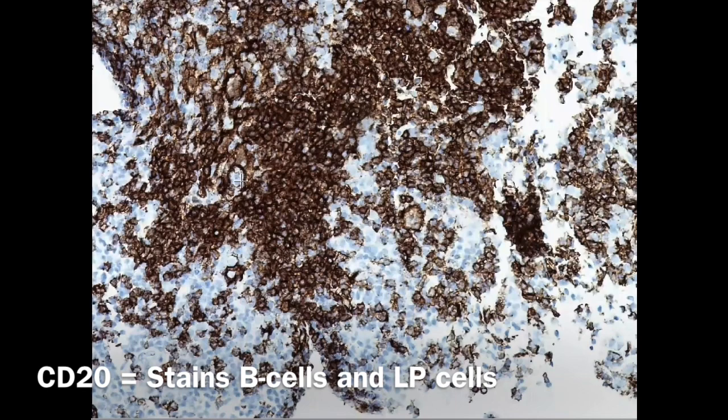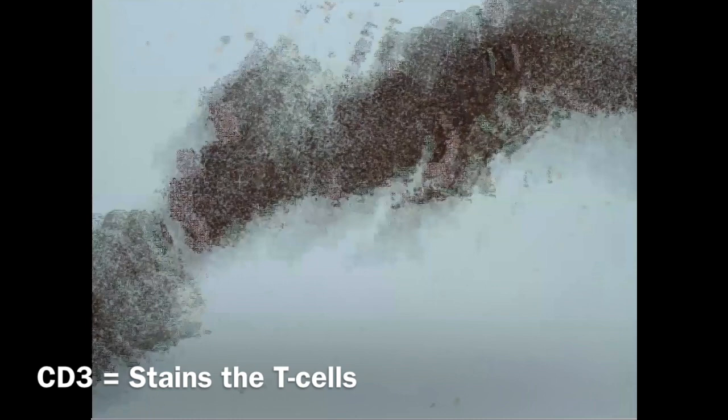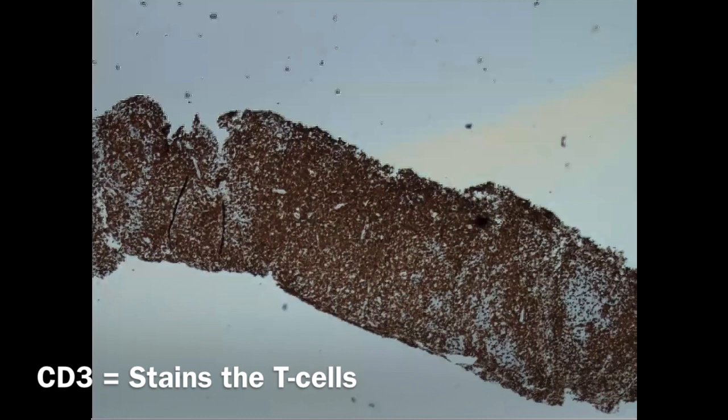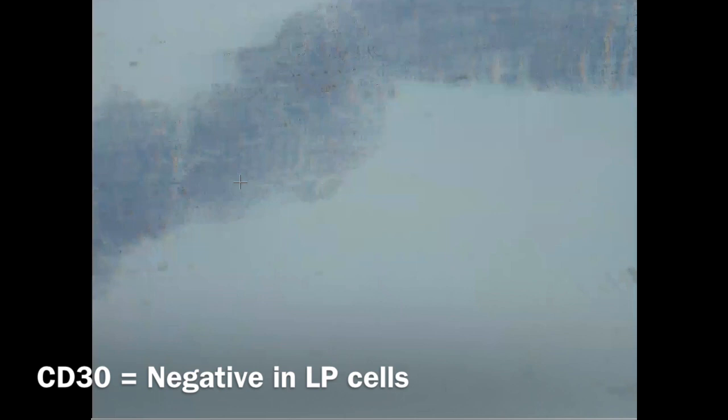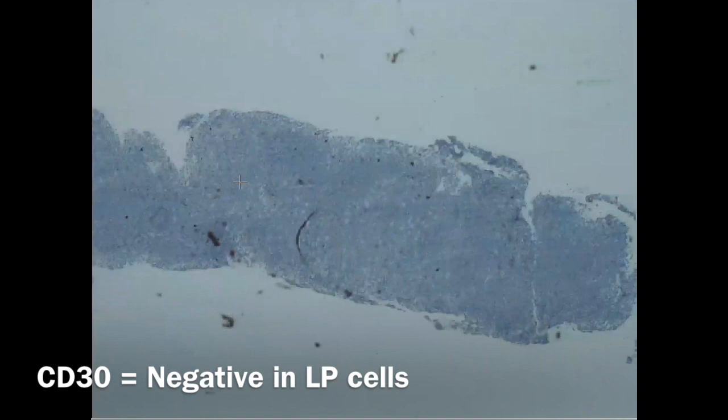Let's go for other stains. This is the CD30, just for completion, to show you that the T cells take the CD30 stain. In the classic type, the Reed-Sternberg cells stain for CD30. Here we don't have staining for CD30, so they are negative.